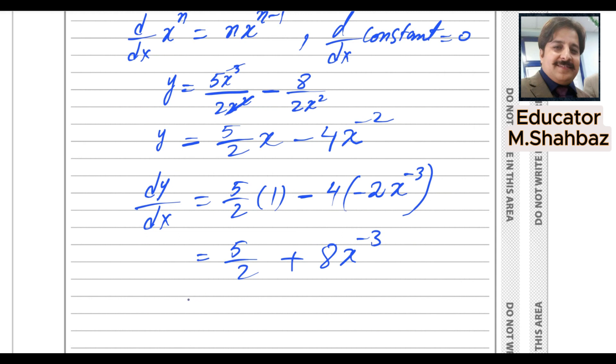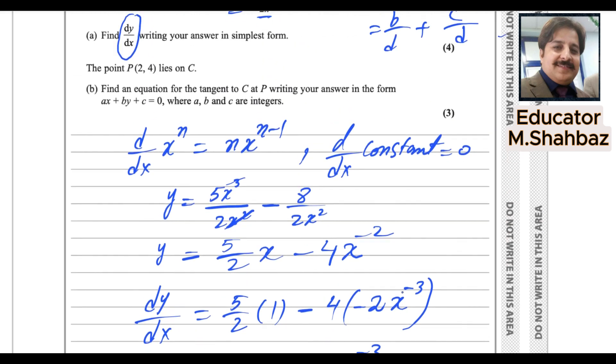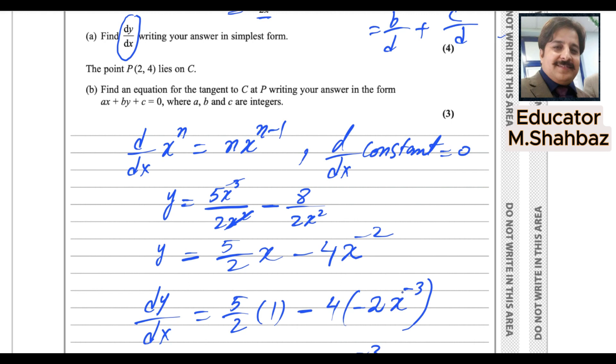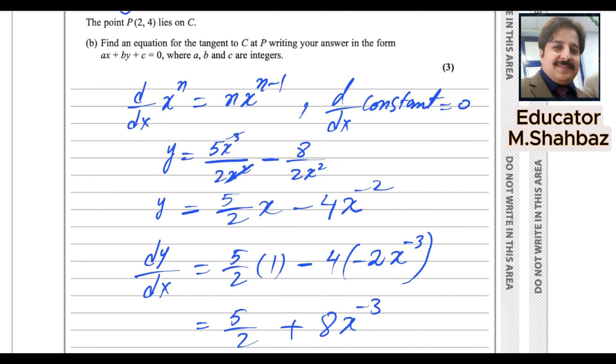So this is the final answer for first part. Sorry, it is not the final answer. First part is done only. Now, what is the second part? This one? Second part, the points P, 2 and 4 lies on C. So find an equation for the tangent to C. Equation of tangent.